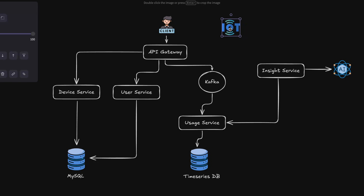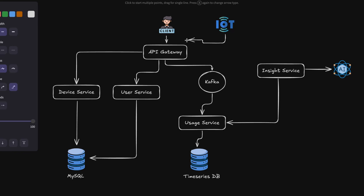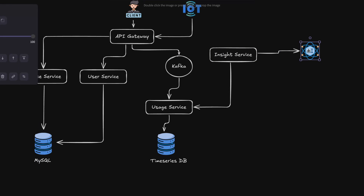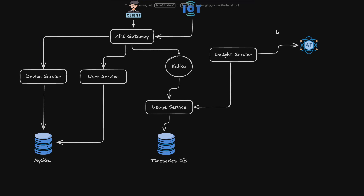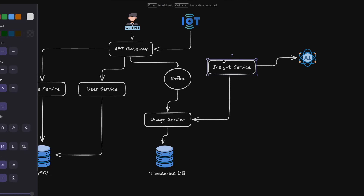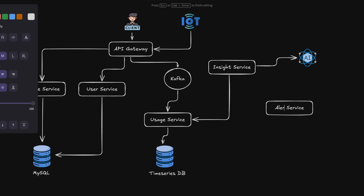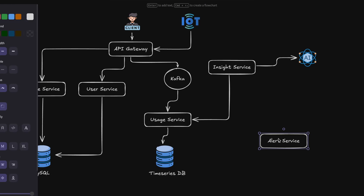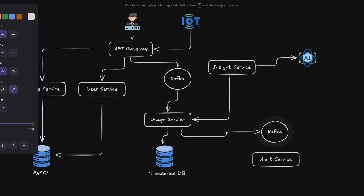We have IoT devices up here, representing all 2.5 million devices. These are going to send data to the API gateway, which will act as a proxy and forward this data into the Kafka queue. The Kafka queue will then feed into the usage service. We also have the insights service connected to the usage service and to an AI model we'll be running locally. The other requirement was an alerting system, so we'll have a separate alert service. We should also add another Kafka topic between the usage service and alert service to handle potential overload.